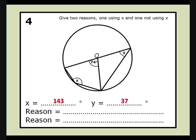y is 37 degrees, and we are asked for two reasons, one using x and one not using x. We can use our answer for x because x and y are opposite angles in the cyclic quadrilateral, so they add up to 180 degrees.